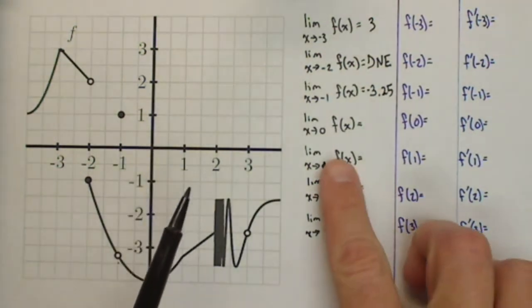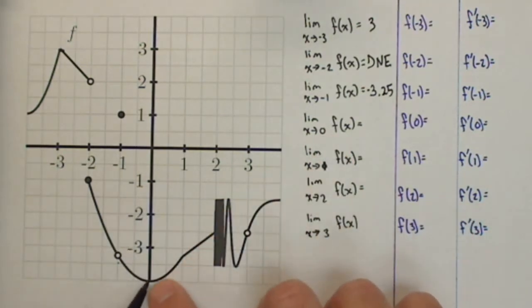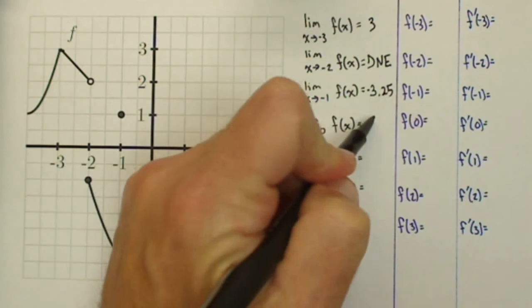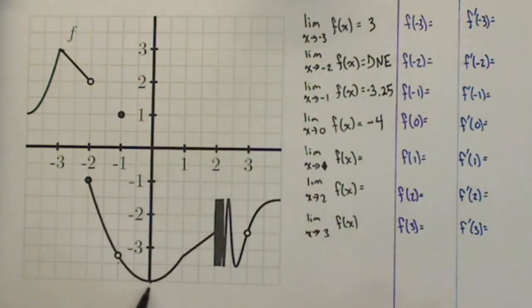As it goes towards zero, coming in from the left and right, both go to negative 4, some nice behavior there. So what we're looking for is that nice function behavior, something kind of smooth. Even if there's a hole there, we can still have a limit there.